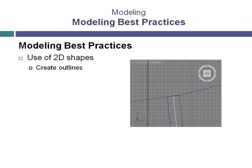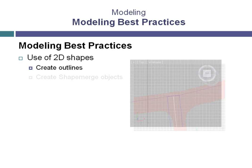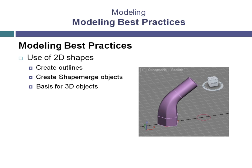Once you have a complete closed spline object, it can be used for a variety of purposes. One purpose is to create a road embedded in a landscape. While there are other ways of drawing the road, using the Shape Merge tool along with closed spline objects makes it much easier and provides a much more flexible result. Two-dimensional shapes are also very helpful when used as the basis for three-dimensional objects.